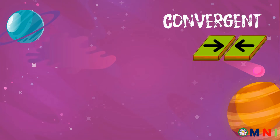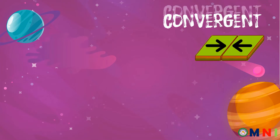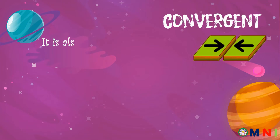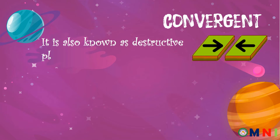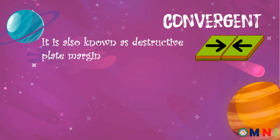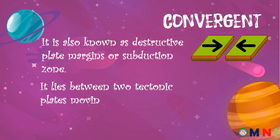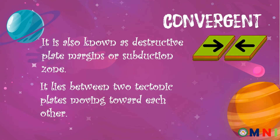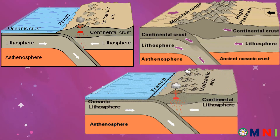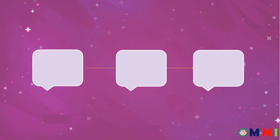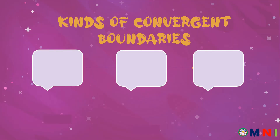Let us now proceed to the second type of plate boundary, and that is the convergent boundary. Convergent plate boundaries are also known as destructive plate margins or subduction zones. It lies between two tectonic plates moving toward each other. In a convergent plate boundary, the denser plate moves or slides under the less dense plate. There are three types of convergent plate boundaries.